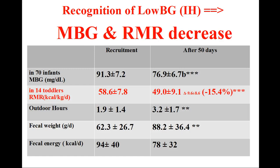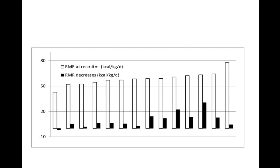Recognition of low BG, or initial hunger, causes a decrease in MBG and in RMR. MBG decreases from 91.3 to 76.9 mg/dL in 70 infants. RMR decreases from 58.6 to 49.0 kcal/kg/day, corresponding to minus 15.4%, in 14 toddlers. Empty columns represent resting metabolic rates (RMR) by indirect calorimetry in 14 two-year-old infants. Black segments show the RMR decreases in each subject after 50 days of training the initial hunger meal pattern (IHMP). Mean RMR decreased significantly in the entire group.